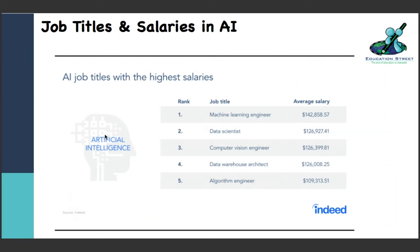These are real-time examples of AI and it is very rewarding. The job titles typically for AI are: Machine Learning engineer, Data Scientist, Computer Vision Engineer, Data Warehouse Architect, and Algorithm Engineer. The salaries range - $142,000 starting salary average. I'm not kidding, because there is a dearth of talent in AI and hence it is one of the most progressive and needed fields by employers. This data is picked from Indeed.